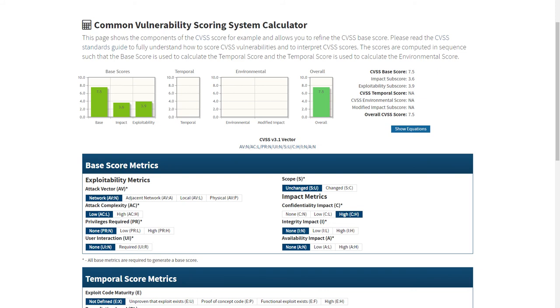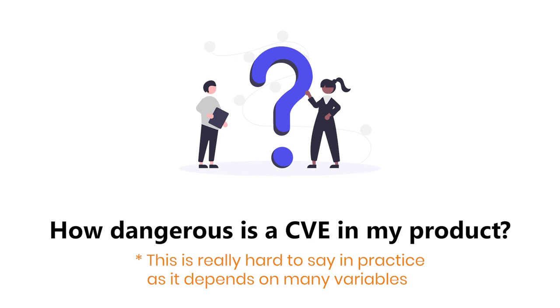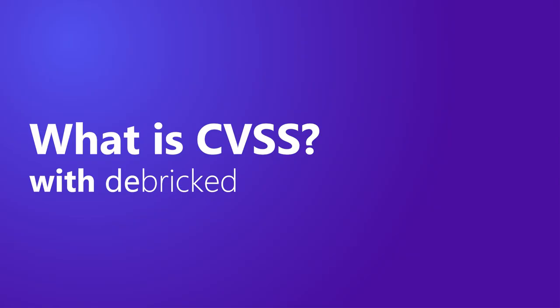Remember that the base score does not take a specific configuration or deployment into consideration, and the score may be heavily affected by this. We are often asked how much you should care about a vulnerability with a severity score of 7 — on a scale of 0 to 10, I would say a 7. Now that you have a basic understanding of CVSS, you can use it to analyze and prioritize the vulnerabilities in your own products.